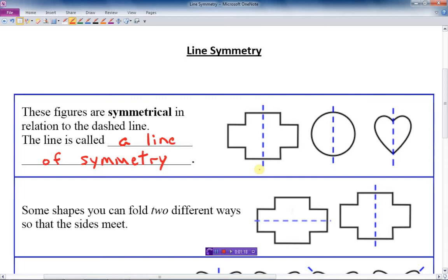Now, if I had put the dashed line down here, a little farther to the right, and I folded at that point, that would not be a line of symmetry. Lines of symmetry are always right in the middle so that both sides are exactly the same.